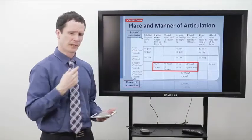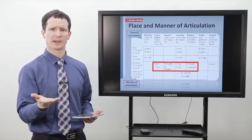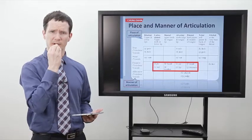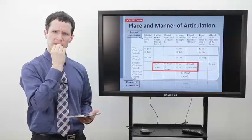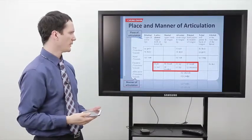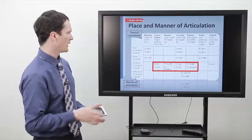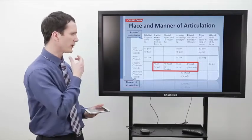Now, if we notice the difference between P and B, they're almost said the same way. The place is very similar and the manner is very similar. However, there's one slight difference: when I say P, I just let the air come out — I briefly stop it and let it explode out of my mouth. But when I say B, I'm actually vibrating my vocal cords a bit. And so, as I vibrate my vocal cords, that makes a slightly different sound between P and B. This is known as voicing — that vibration of the vocal cords.